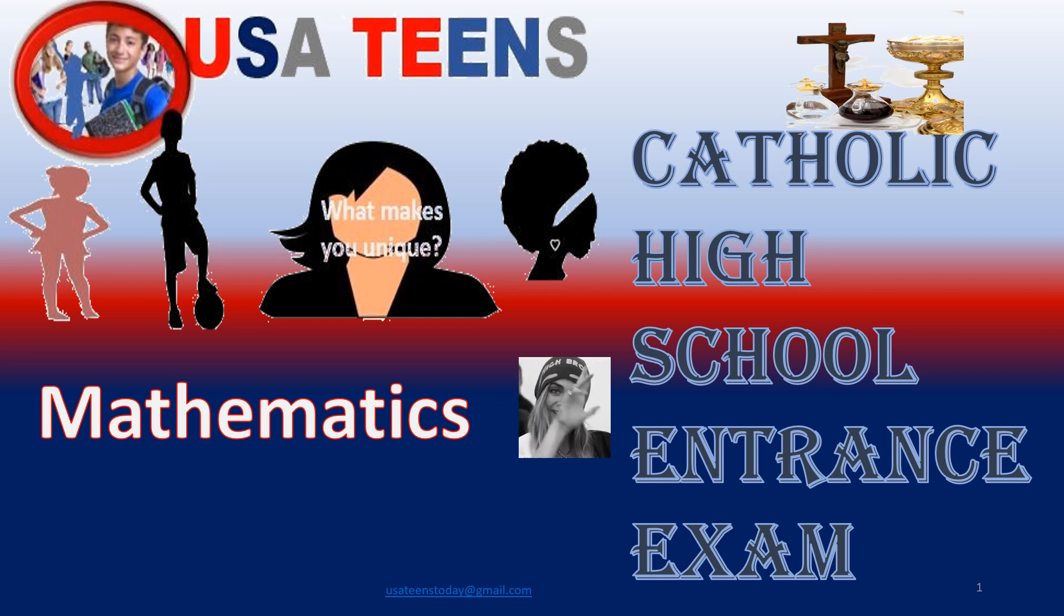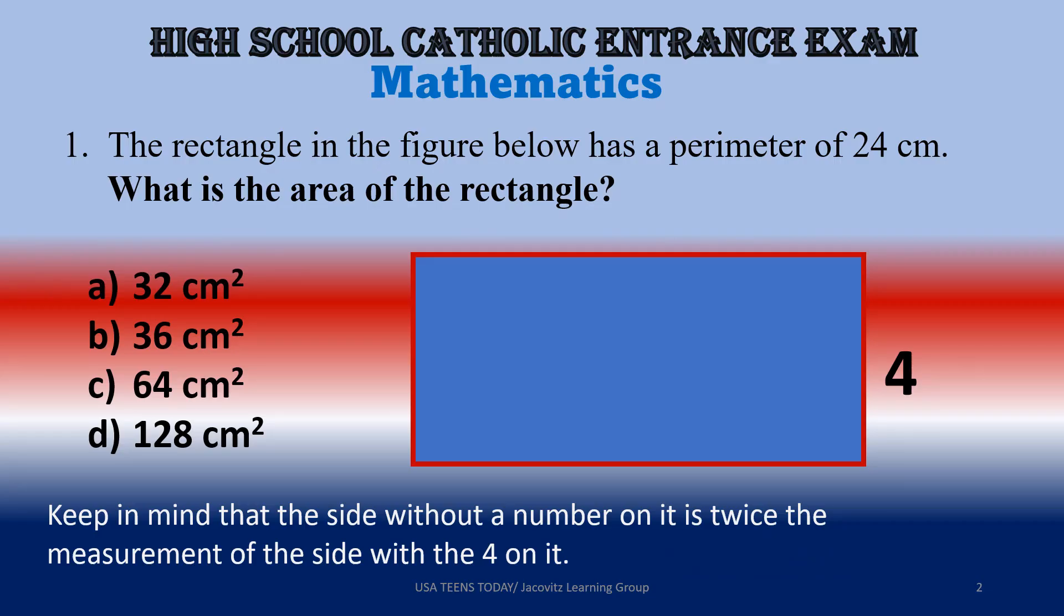Hi guys, welcome to the Catholic High School Entrance Exam. Are you ready to begin? This is the mathematics portion. Our first question: the rectangle in the figure below has a perimeter of 24 centimeters. For your answer choices, they put centimeters squared, so all of them say centimeters squared, so you don't have to worry about that. You don't have to worry about it if you don't see it in the question either, as long as all of the units of measurement are the same.